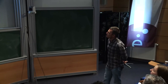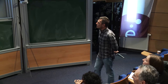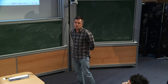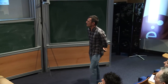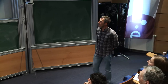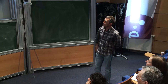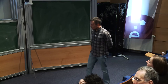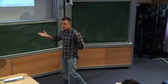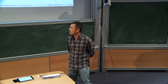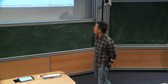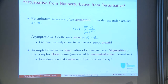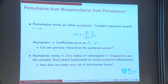That's one aspect of understanding resurgence and asymptotics. The other thing, of course, is that asymptotic series have zero radius of convergence, so I can't basically compute anything — there are associated singularities on the complex plane, as has been discussed. At the end of the day, if I'm computing some physical observable, I would like to have a number and not an infinity. So how can we make sense out of perturbation theory? That's the second question we'd like to answer.